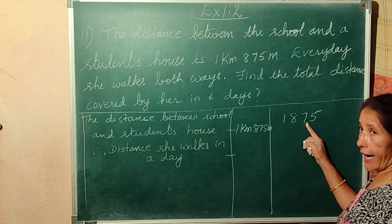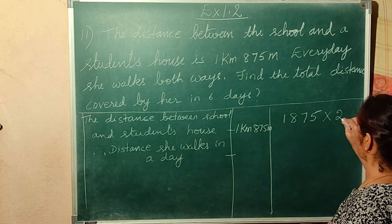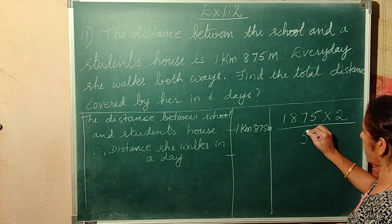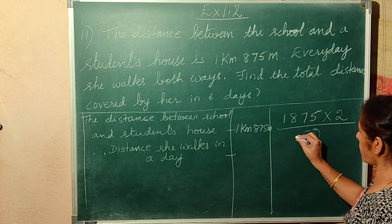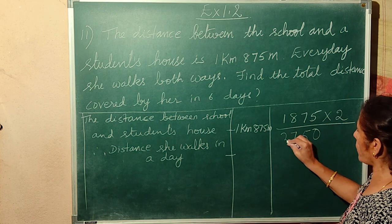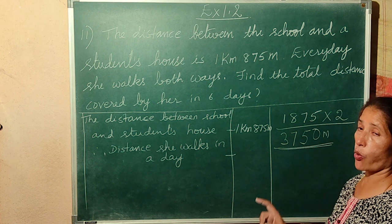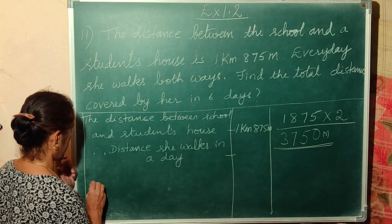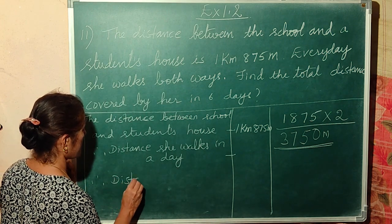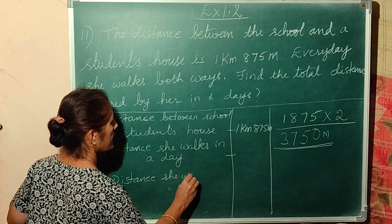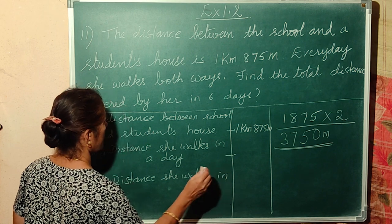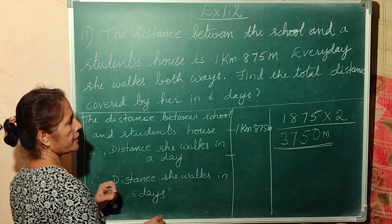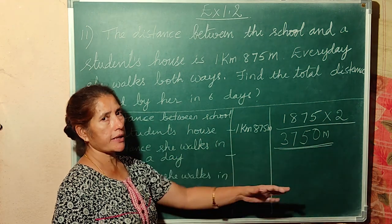Calculating 1875 into 2: 2 fives are 10, 2 sevens are 14 plus 1 = 15, 2 eights are 16 plus 1 = 17, so she walks 3,750 meters in a day. Distance she walks in 6 days: in 1 day 3,750 meters, so in 6 days how much?